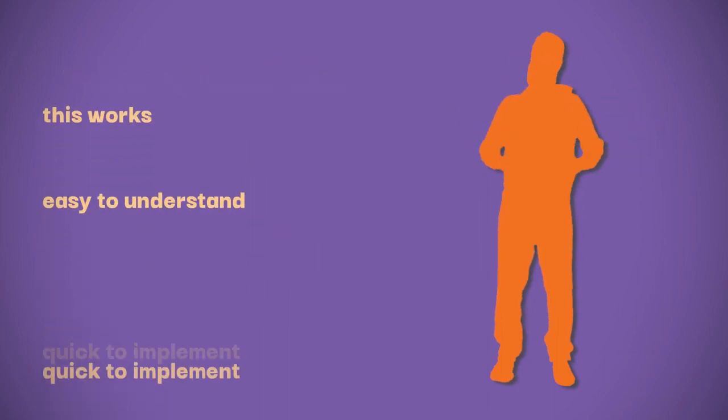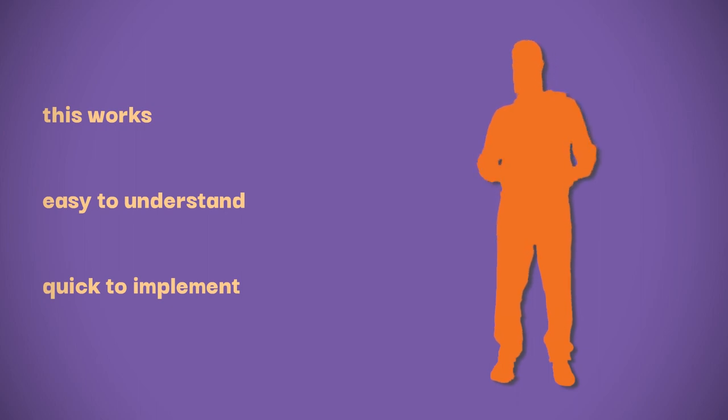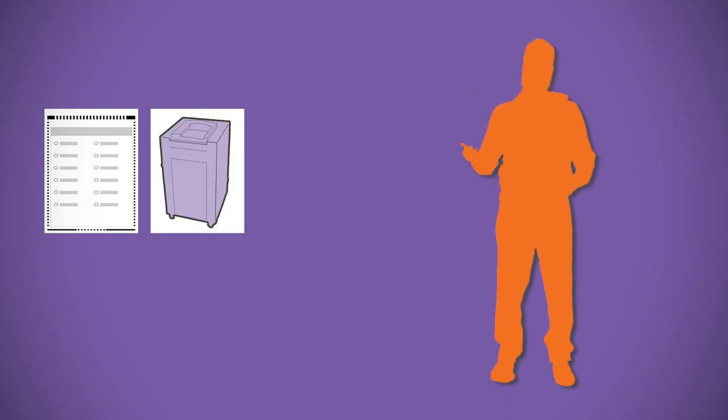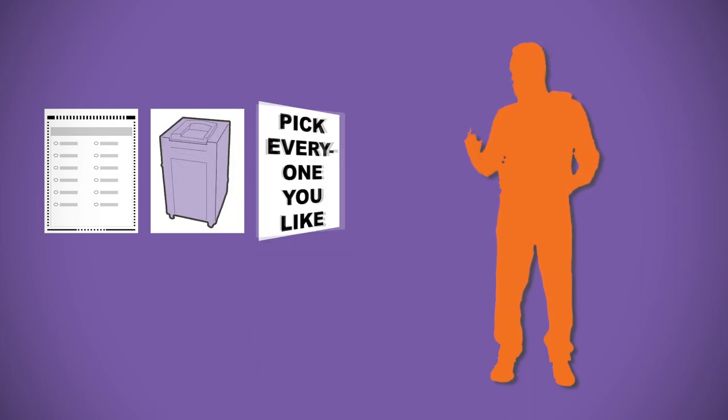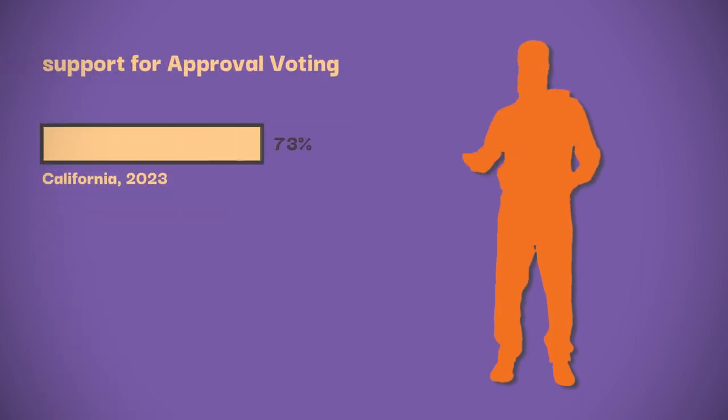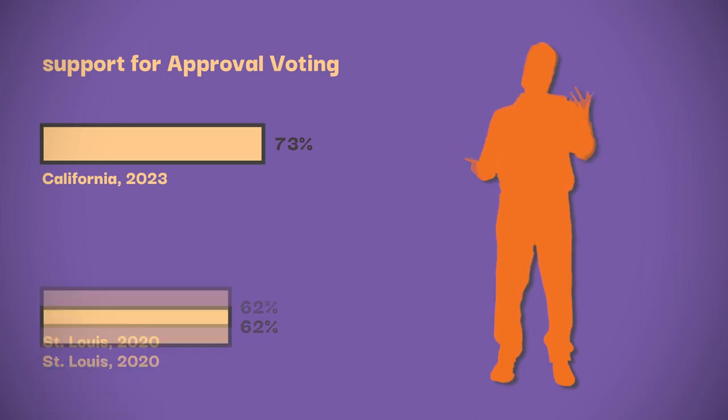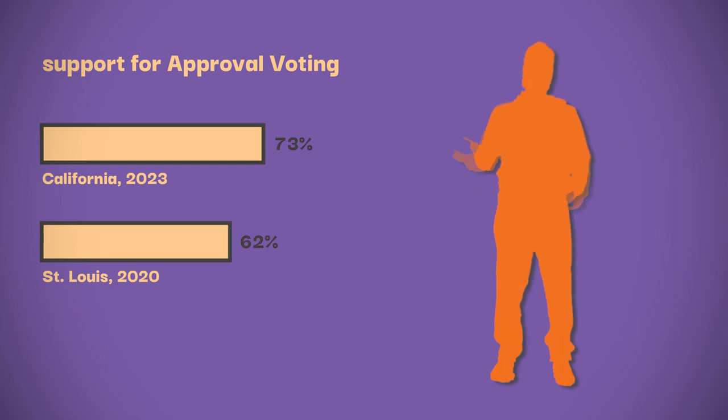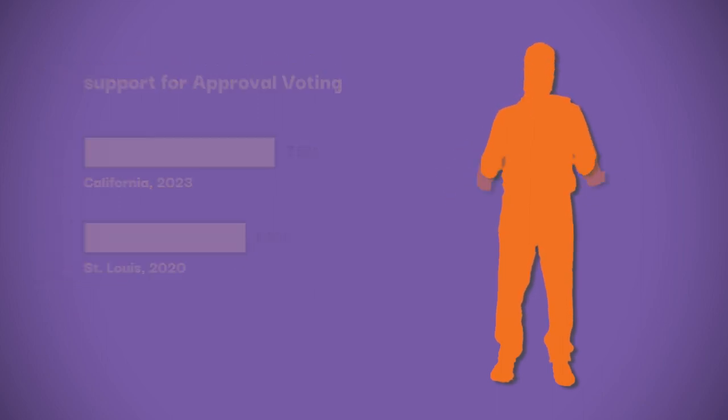Approval voting is easy to understand and quick to implement. Where other voting reforms can take over a year to build and explain and put into practice, approval voting is up and running in a matter of months because it doesn't use anything we don't already have. It's the same ballots, the same polling machines. We just switch from picking one to picking everyone you like. And it already has California's support. Right now, nearly three-quarters of the state says if switching to approval voting were on the ballot, they would vote for it. That's more than St. Louis had when they wrote it into law. So the only thing standing between California approval voting and a more representative democracy is the funding it takes to get it on a ballot.